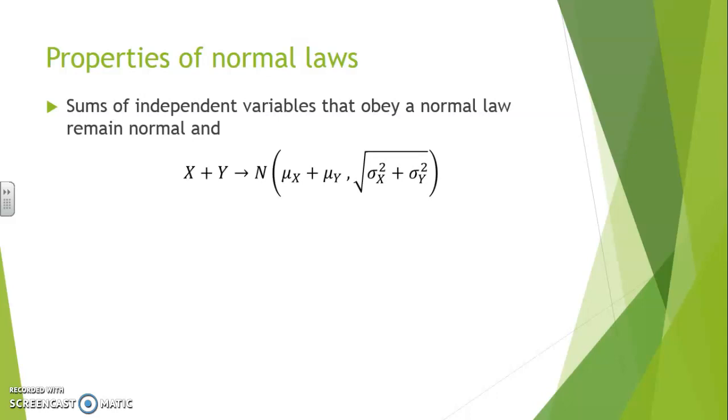The average value of this new normal law is the sum of the average values. And the variance of X plus Y is the sum of the variances because of the independence aspect. This is why the standard deviation of X plus Y is the root of the two variances added up together.